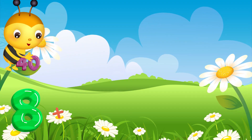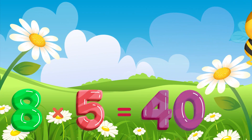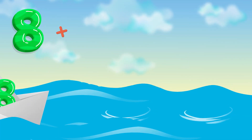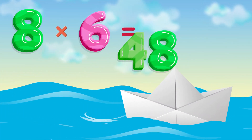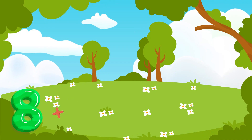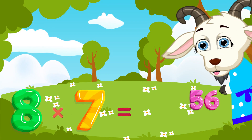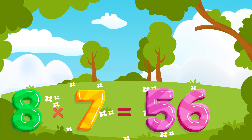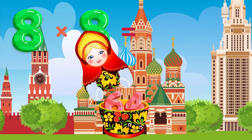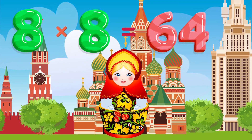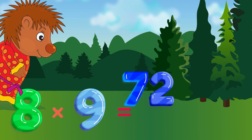Eight times five is forty, eight times six is forty-eight, eight times seven is fifty-six, eight times eight is sixty-four, eight times nine is seventy-two.